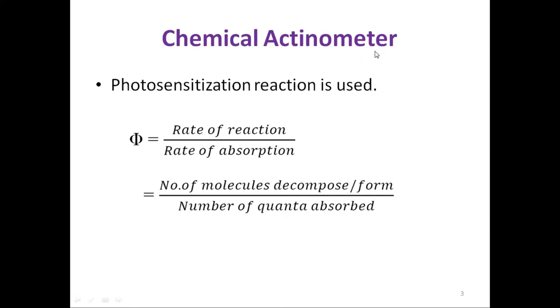Chemical actinometers measure the quantity of radiation absorbed. Photosensitized reactions are commonly used as the quantum yield of photochemical reaction is given by: quantum yield equals rate of reaction divided by rate of absorption, or the number of molecules decomposed or formed divided by number of quanta absorbed.